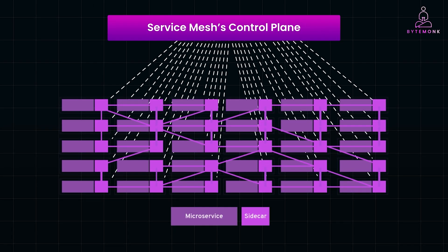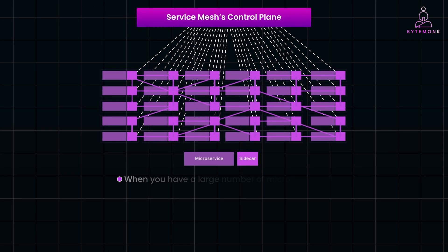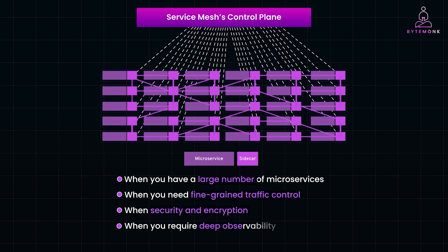Service mesh isn't always necessary for every architecture, but you might need it when you have a large number of microservices that need reliable, secure communication, when you need fine-grained traffic control such as during canary deployments or A/B testing, when security and encryption of your internal traffic is a priority, or when you require deep observability into your microservices performance and behavior.